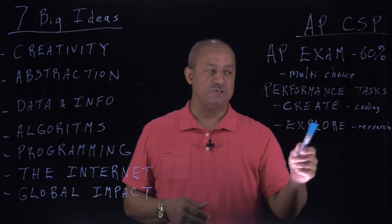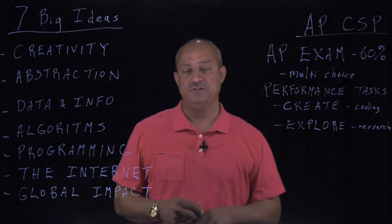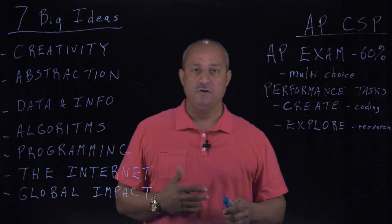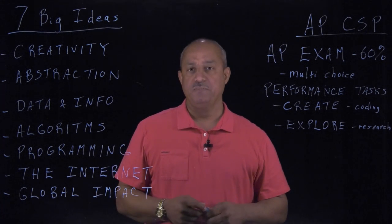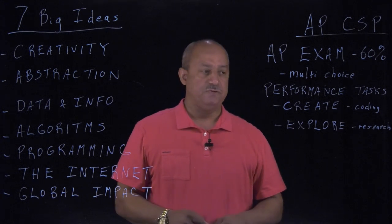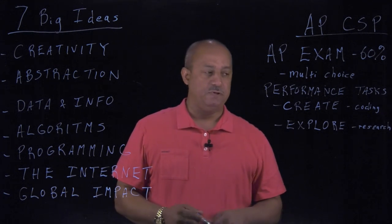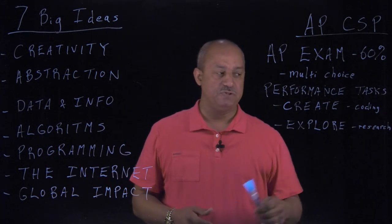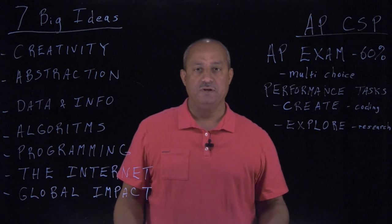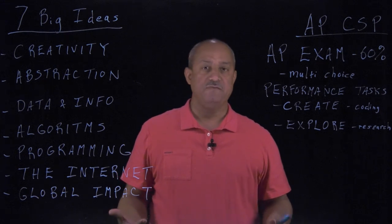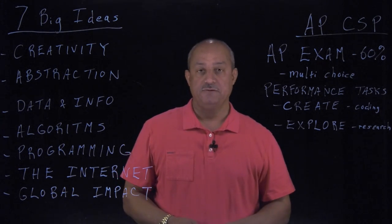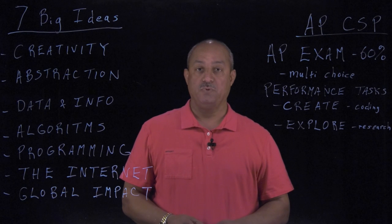The first performance task is called Create — you're going to be coding an application. You'll have a collaborative partner for input who may help you on a piece of that, but you'll mainly be coding the application yourself and uploading it. The second is called Explore — you'll research a computer innovation out there and upload that to the College Board as well.